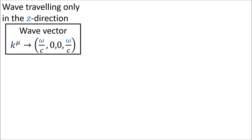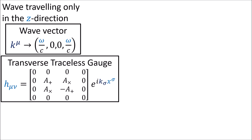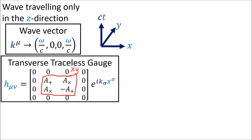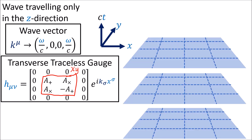If you recall from the last video on the transverse traceless gauge, we derived gravitational plane waves traveling completely in the z direction, described by this wave vector. The resulting two wave amplitudes A_plus and A_cross only impact the metric in the x and y directions. So to understand these gravitational waves, let's look at a spacetime diagram for how the xy plane changes over time.